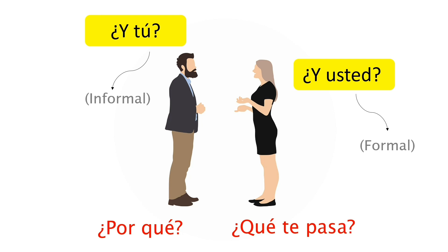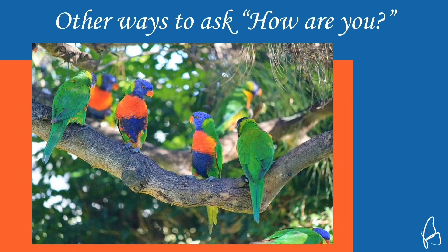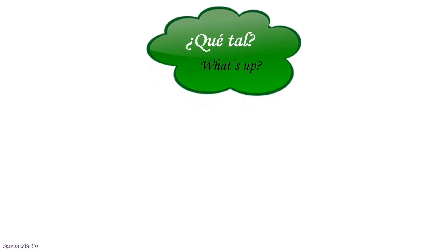You would use that second example if you are familiar with the person. There are other informal ways to ask someone how are you in Spanish, and we will cover a few examples here. The first is ¿qué tal? — ¿Qué tal? is one form of saying what's up or how's it going.